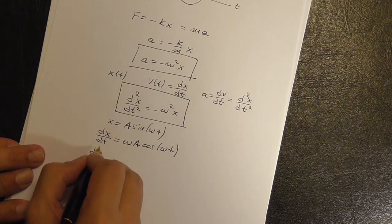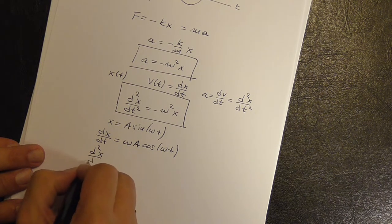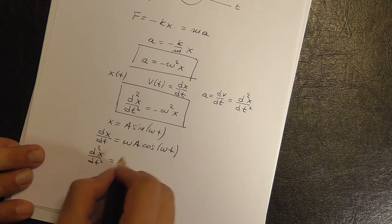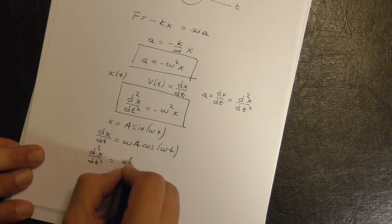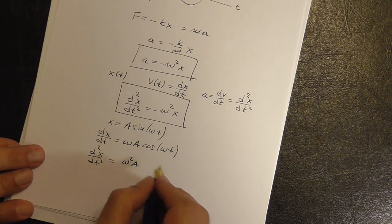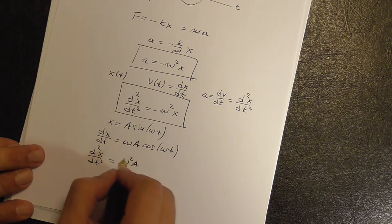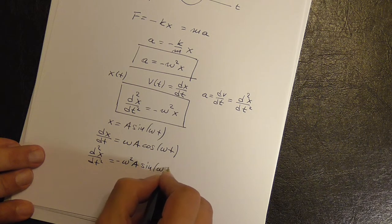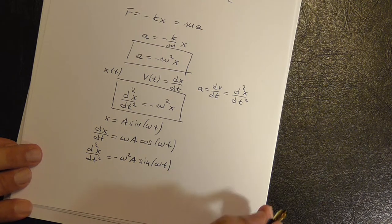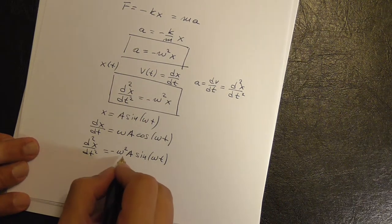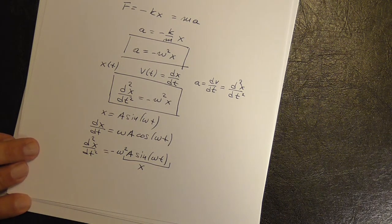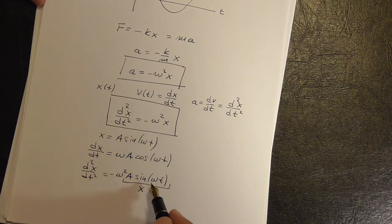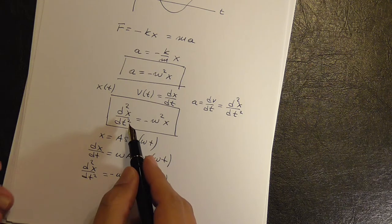And then the second derivative of X, I get another omega from this, I get the A, and the cosine becomes a minus sine. And you can see where this is going. This is X and I have verified that this is indeed a solution to this differential equation. You could do the same thing with a cosine.